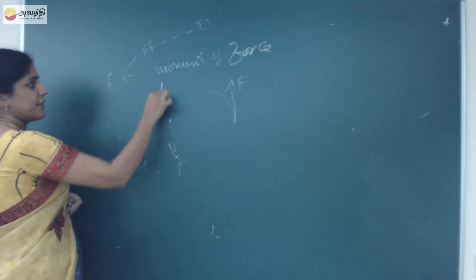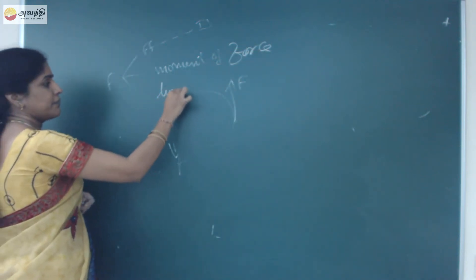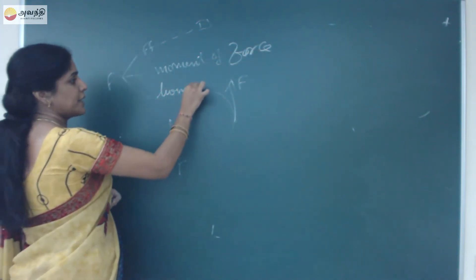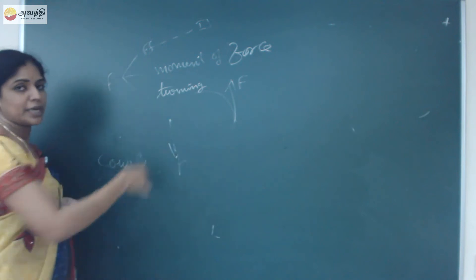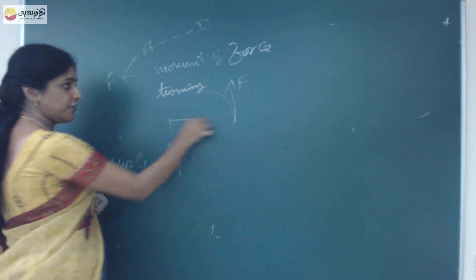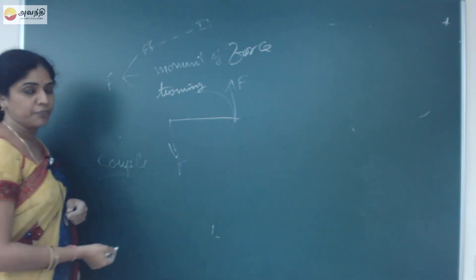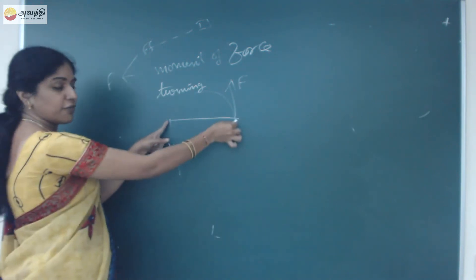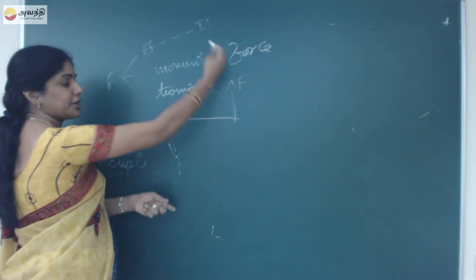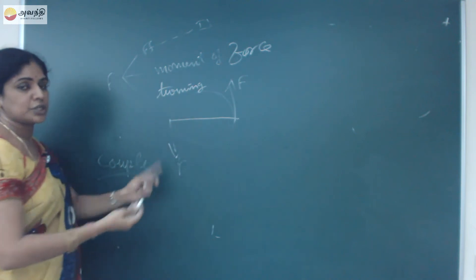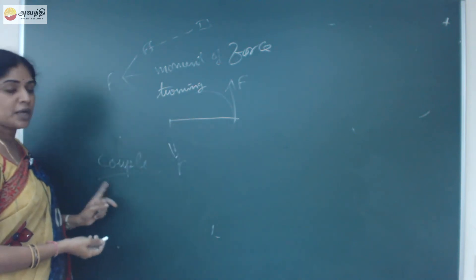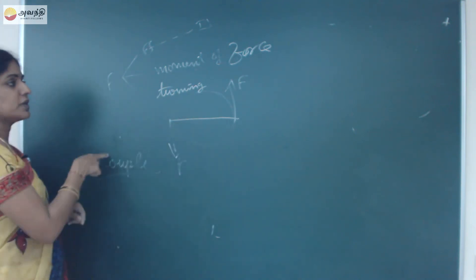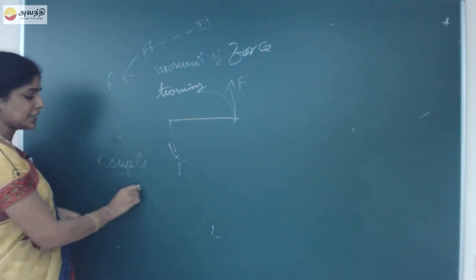The turning effect causes the object to rotate. Two forces are applied — two equal forces but they act in opposite direction. This force effect we call as the couple, and the moment of this couple we call as a torque.